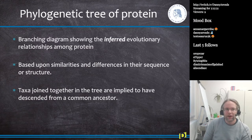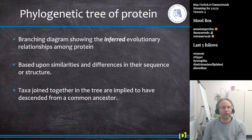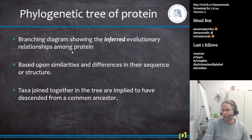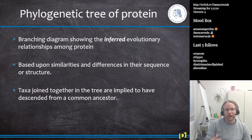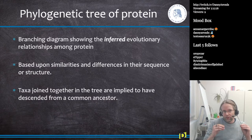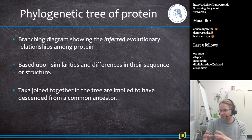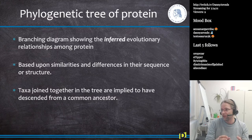When looking at a phylogenetic tree made of proteins, the branching diagram shows the inferred evolutionary relationship or evolutionary distance between different proteins. A phylogenetic tree is based on similarity and differences in sequence or structure. The amino acid sequence of a protein can change but the structure can remain the same — for example, you can replace one long non-polar fatty acid side chain with another and the protein doesn't really change.